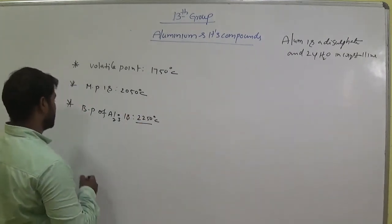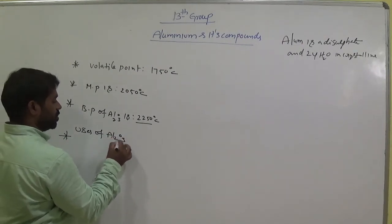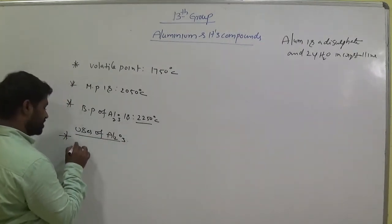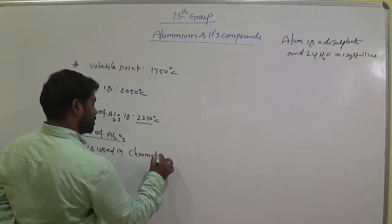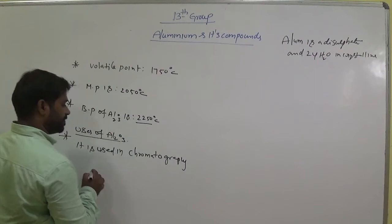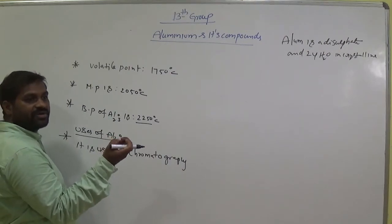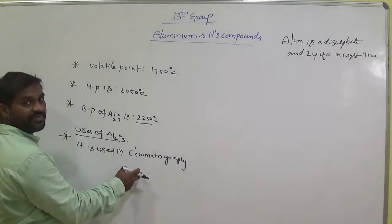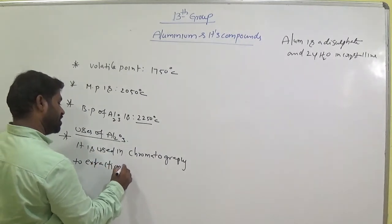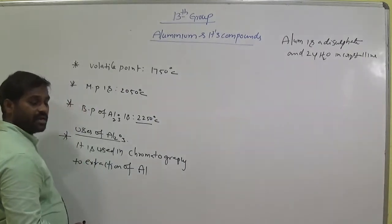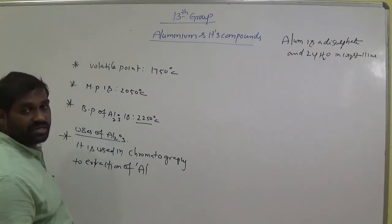Uses of Al₂O₃. So it is used in chromatography. Chromatography means it is the separation technique. If two or more mixes are there, if you want to separate that mixer as individual, we can use this technique. Chromatography is the separation technique, keep it in your mind. To extraction of, extraction means separation, to extraction of Aluminium. We can apply this chromatography technique.